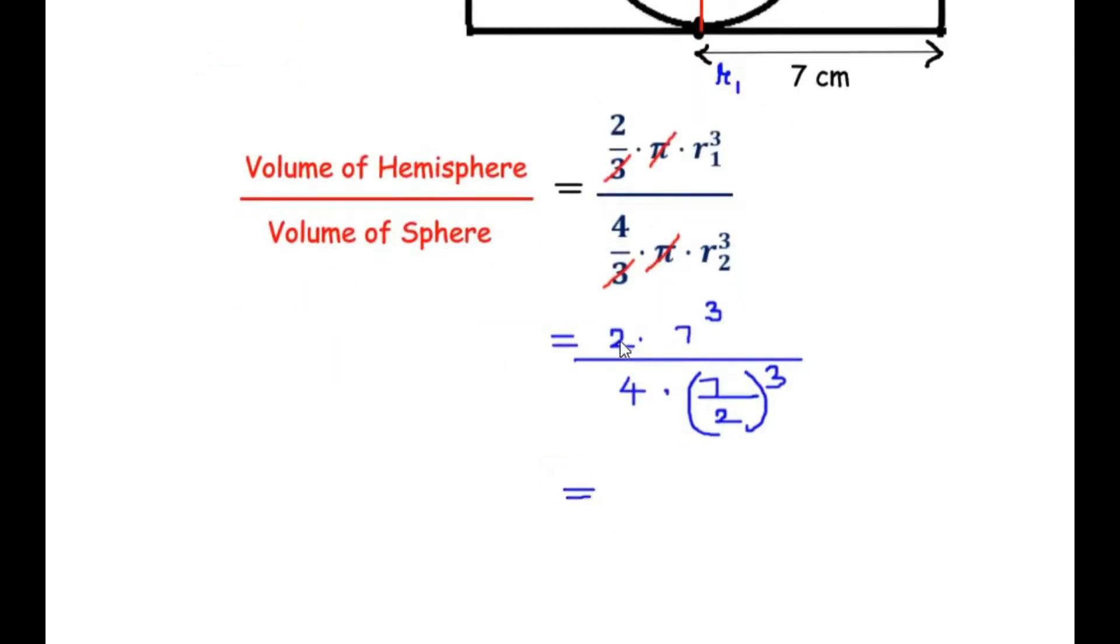Next, let us simplify this. We can divide 2 and 4, leaving 1 in the numerator and 2 in the denominator. In the numerator we have 7³, which I'll split as 7 × 7 × 7. In the denominator we have 2 × (7/2)³, which is 2 × (7/2) × (7/2) × (7/2).